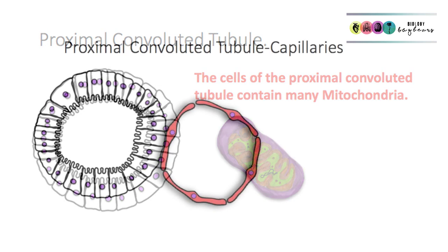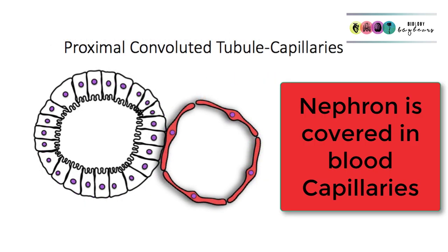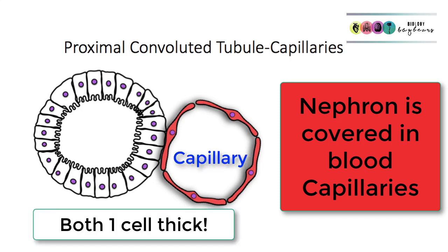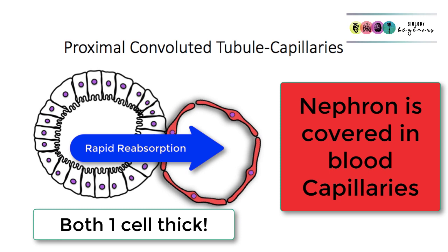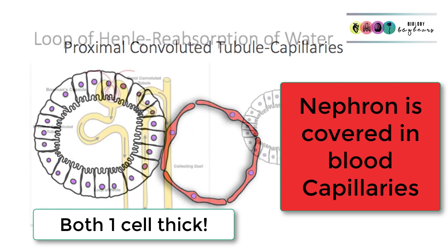It's also worth remembering that surrounding all of the nephron, including the proximal convoluted tubule, is a network of blood capillaries. So materials that pass out of the proximal convoluted tubule are very quickly passed into a blood capillary and back into the blood.